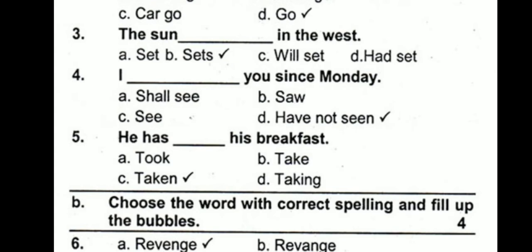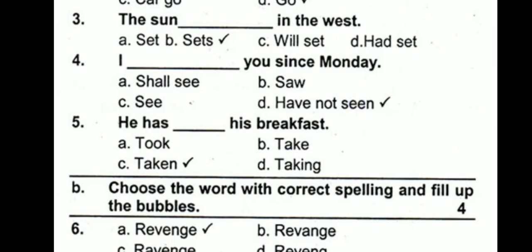'I dash you since Monday.' The answer is 'I have not seen you since Monday.' 'Since' and 'for' are used when the tense is a perfect continuous tense — present perfect continuous, past perfect continuous, or future perfect continuous. We look for the option with perfect continuous tense, and the only option that fits is 'have not seen.' Options like 'I shall see,' 'saw,' or 'see you since Monday' do not make sense.